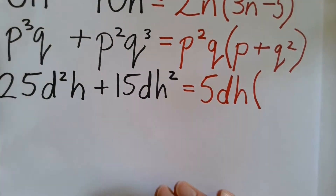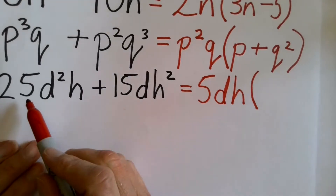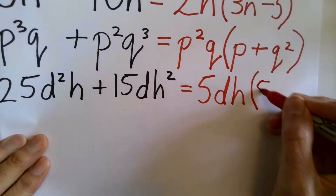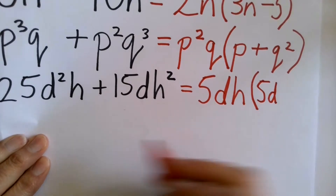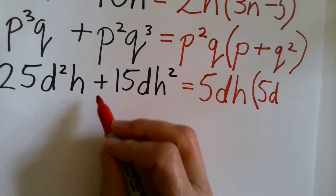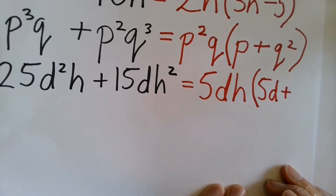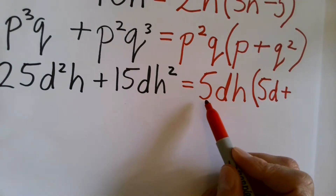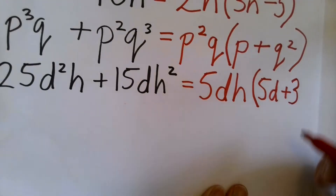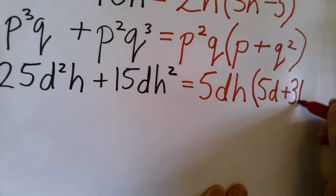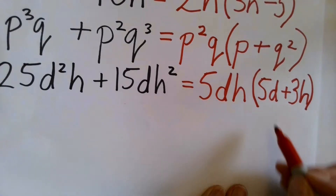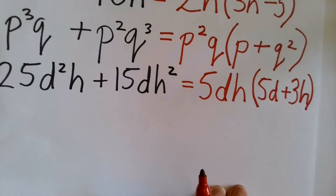We've got space now to finish. So we've got 5dh, and we want to multiply term by term. We've got to multiply 5 by 5 to get 25, and d times d to give us d squared — we already have the h, so that bit's sorted. Then we put plus, and we're trying to get 15 d h squared. 5 goes into 15 three times, we've already got the d, and we want h squared so we need to multiply h by h. Then we check that 5d and 3h don't have any common factor — and they don't. So that's done.